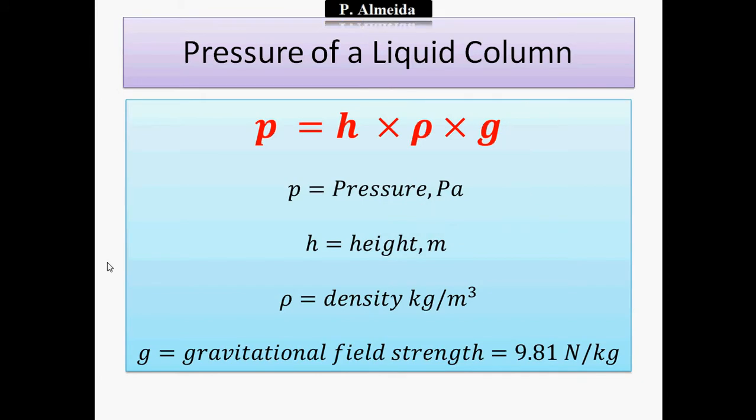I can use this formula that says P equals H times rho times G. P is the pressure in Pascal or Newton per meter squared. H is the height in meters, so the height or the depth where I'm trying to measure the pressure.